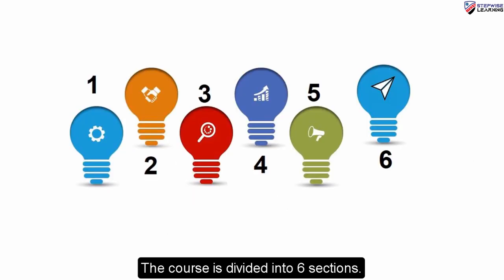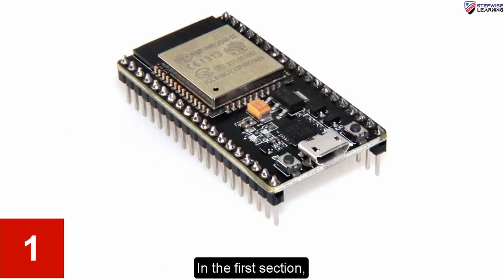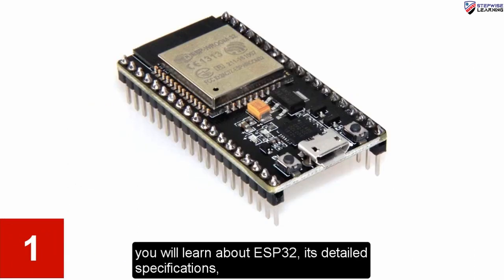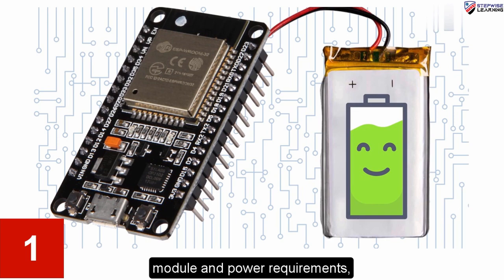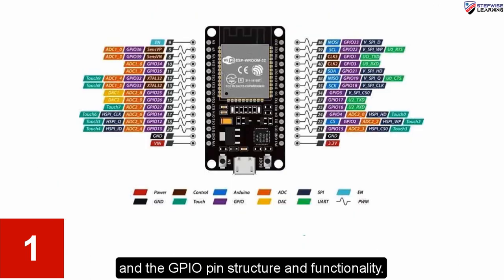The course is divided into 6 sections. In the first section, you will learn about ESP32, its detailed specifications, module and power requirements, and the GPIO pin structure and functionality.